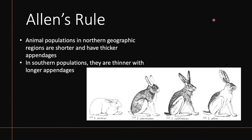Lastly, Allen's rule states that animal populations in northern regions tend to be shorter with thicker appendages and extremities, while the southern population of the same species tends to be thinner with longer appendages and extremities. Looking at this rabbit example: on the far left, the northern rabbit is shorter with very short forelegs, hind legs, tail, and ears. The southern rabbit on the right is slimmer, with longer legs, a longer tail, and longer ears — slimmer and longer throughout its anatomy.